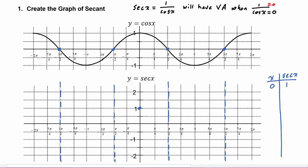Now let's think about how this will approach the asymptotes. You can see that as the x value of cosine approaches pi over two, its y value is getting smaller and smaller. So as cosine of x gets smaller and smaller, one over cosine of x will get bigger and bigger.